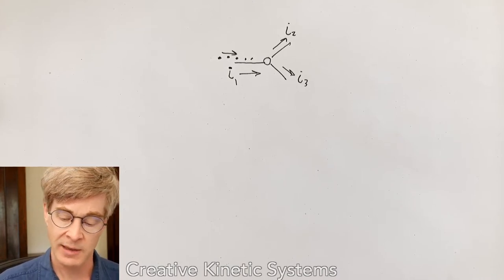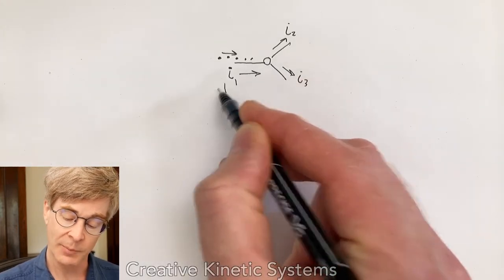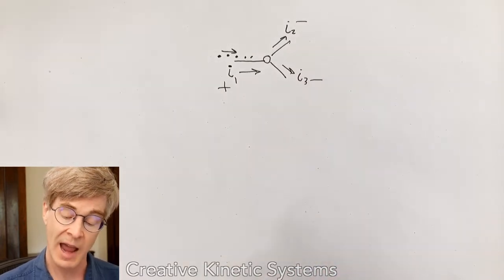That depends upon choosing the sign convention appropriately. Here, let's just say that I1 is a positive current flowing in, I2 is a negative current flowing out, and I3 is a negative current flowing out.